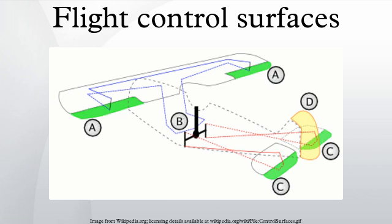The longitudinal axis passes through the aircraft from nose to tail. Rotation about this axis is called roll.